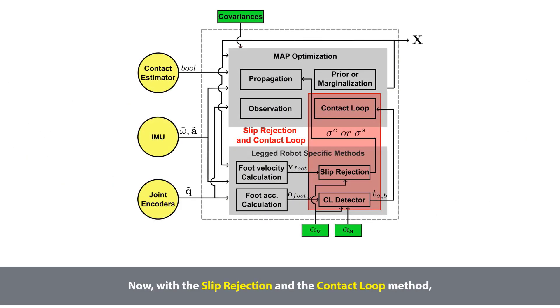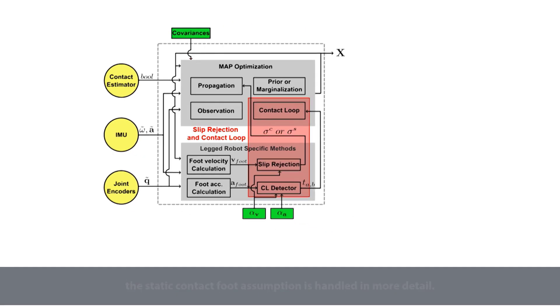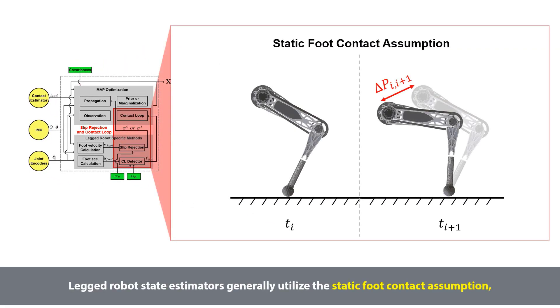Now, with the slip rejection and the contact loop method, the static contact foot assumption is handled in more detail. Legged robot state estimators generally utilize the static foot contact assumption, which assumes that the foot in contact does not move.